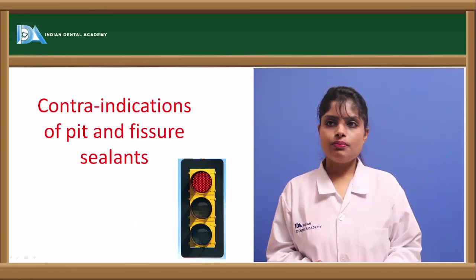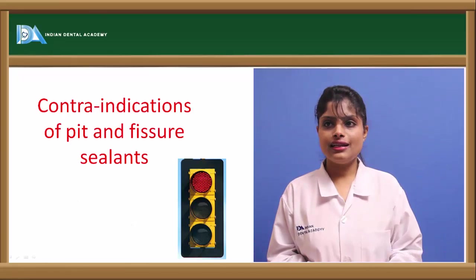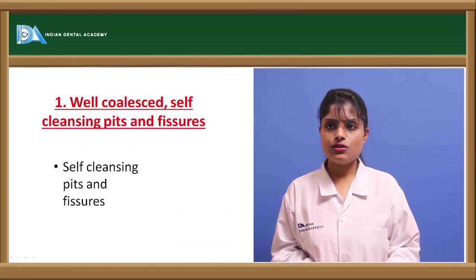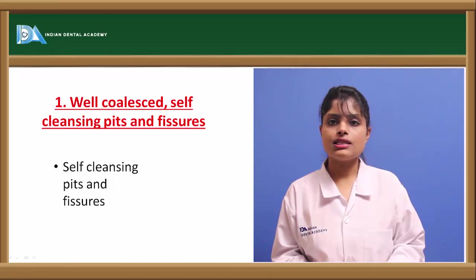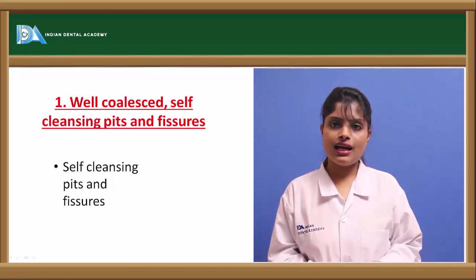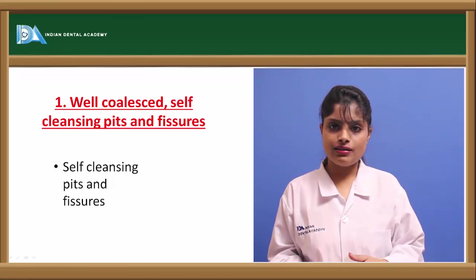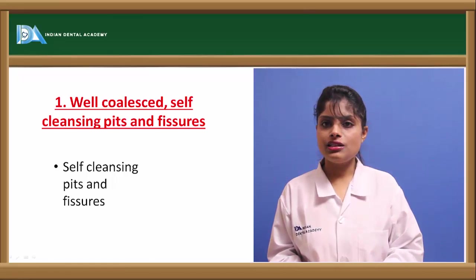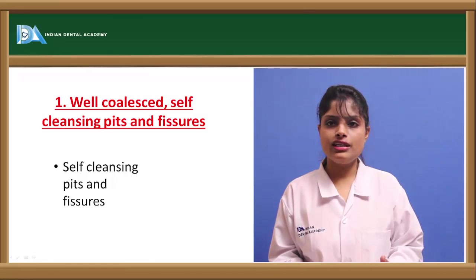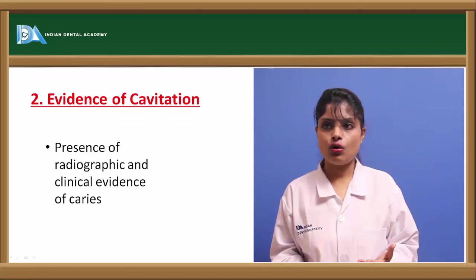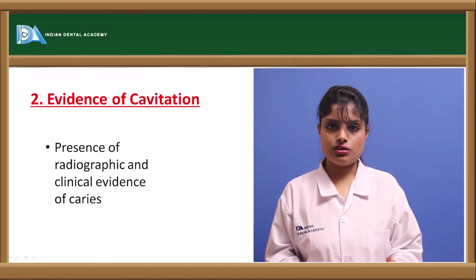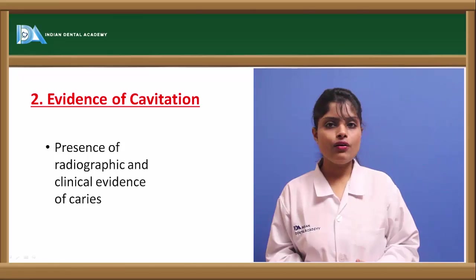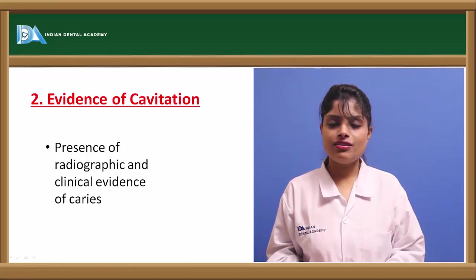Now, pit and fissure sealants have certain contraindications. These are in the case of self-cleansing pits and fissures, as they do not require any sealant because by the means of natural defence mechanisms of the saliva, the tongue, and physical cleaning factors, bacteria can be cleaned or plaque can be cleaned out of these pits and fissures — they will not retain any plaque at all. If there is evidence of calcification or cavitation of such fissures, or a breakdown of the enamel from the layer of the pits and fissures, or radiographic evidence of caries, they cannot be covered by sealants.